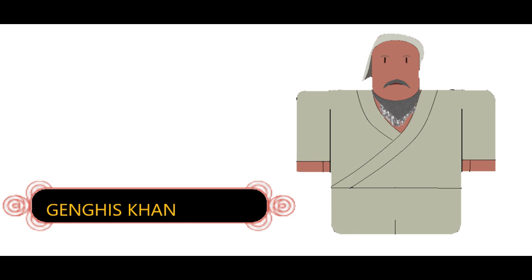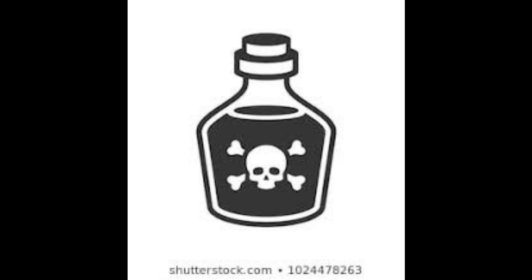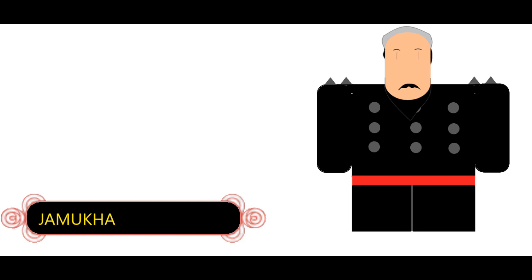At the age of eight, Temujin was sent to his future wife's house. While his father was on his way back, he was poisoned by some warriors and died after stumbling back home. After this, his tribe abandoned them and so they were forced to look after themselves. Here he met his blood brother and future enemy, Jamukha.